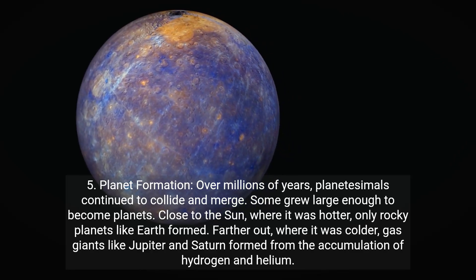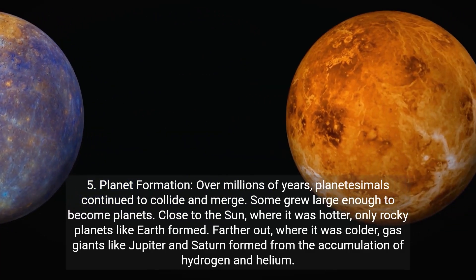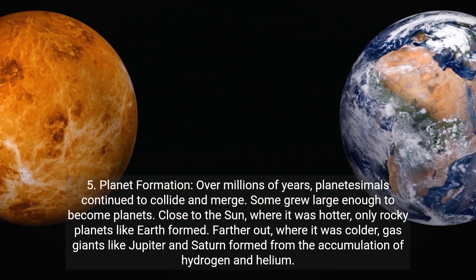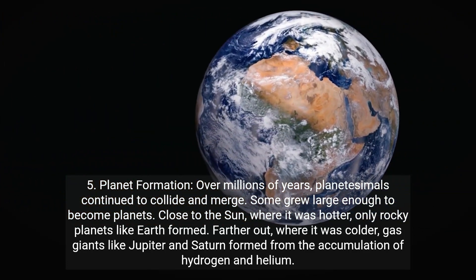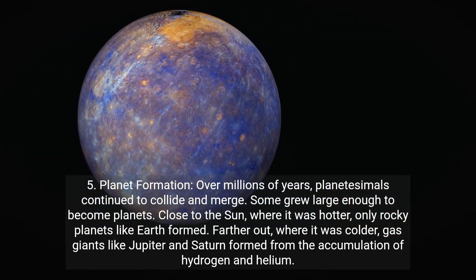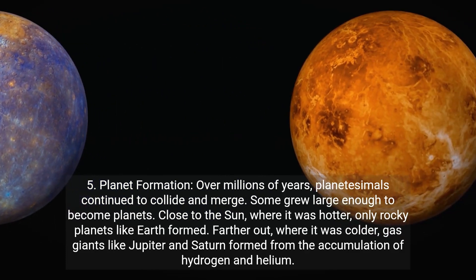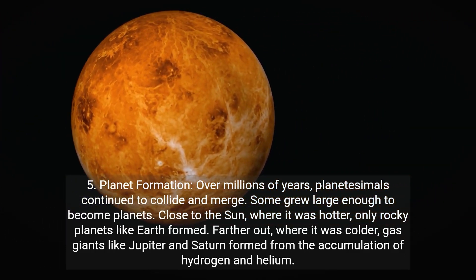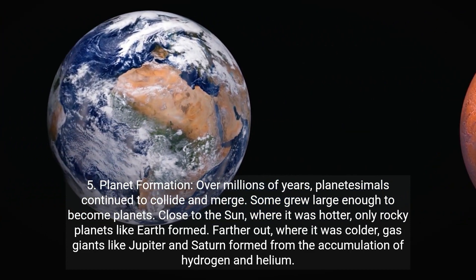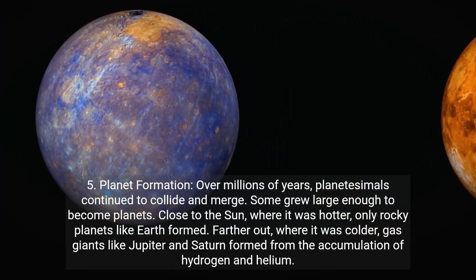Over millions of years, planetesimals continued to collide and merge. Some grew large enough to become planets. Close to the Sun, where it was hotter, only rocky planets like Earth formed. Farther out, where it was colder, gas giants like Jupiter and Saturn formed from the accumulation of hydrogen and helium.